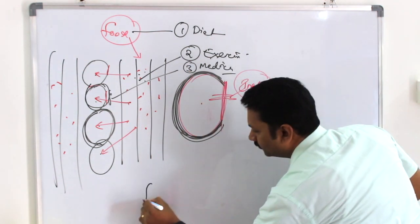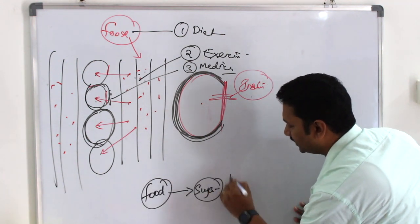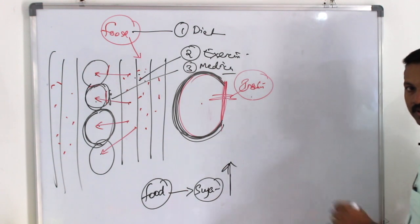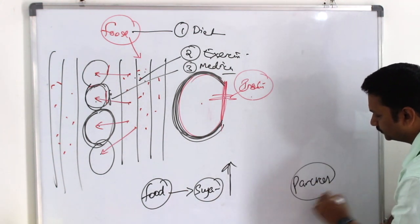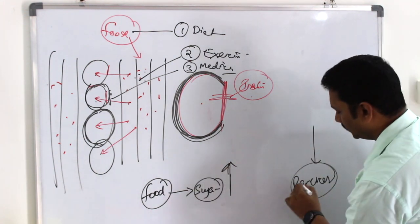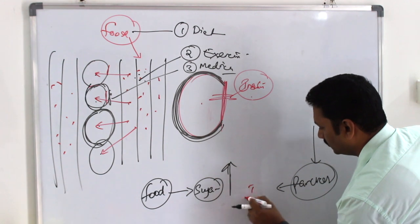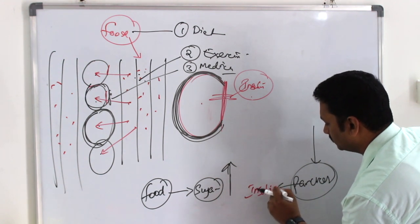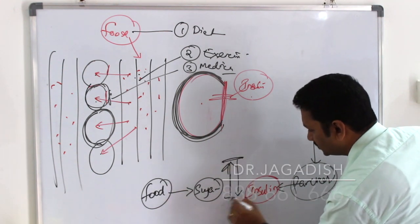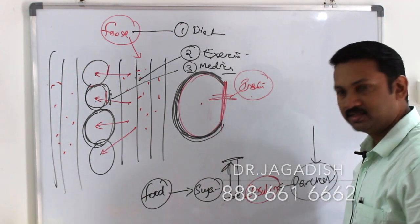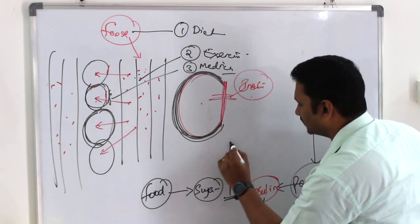After food, sugar levels rise in the blood. The pancreas detects this and releases insulin. Insulin opens the door, and blood sugar levels return to the normal range. In the initial stages, if insulin production is low, sugar rises — so we can develop diabetes. This is where the tablet system helps.